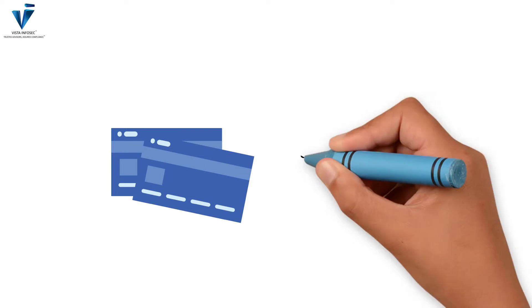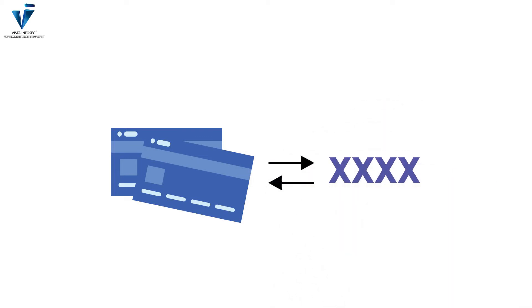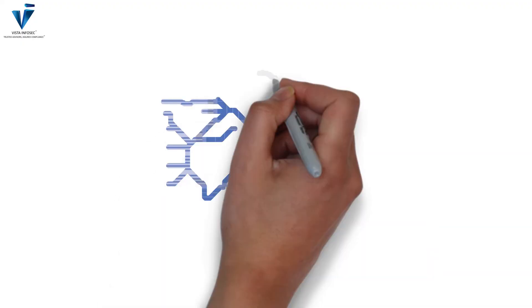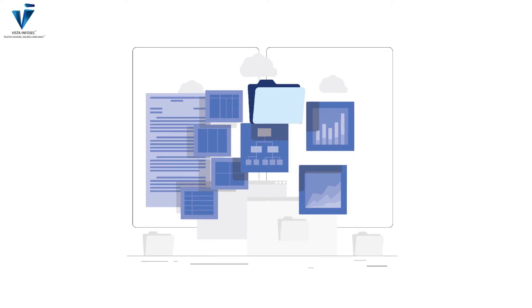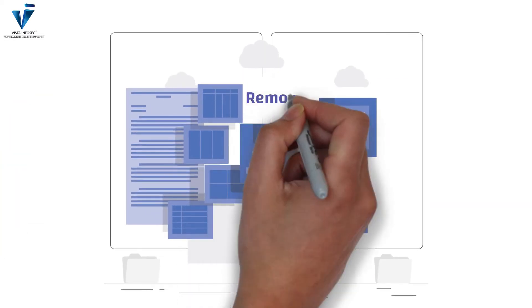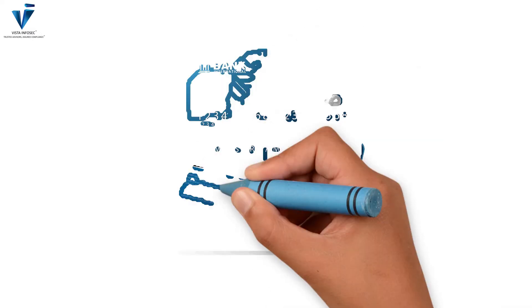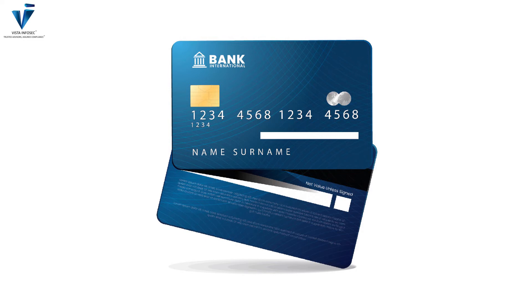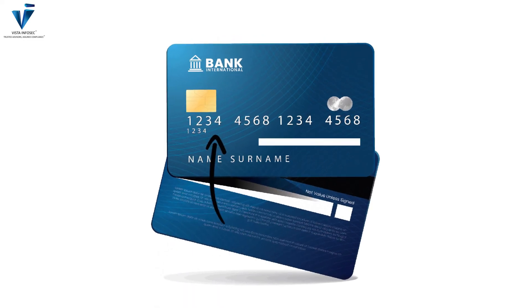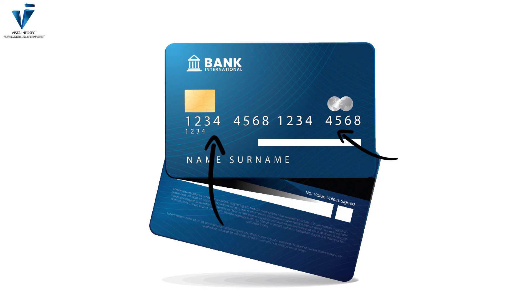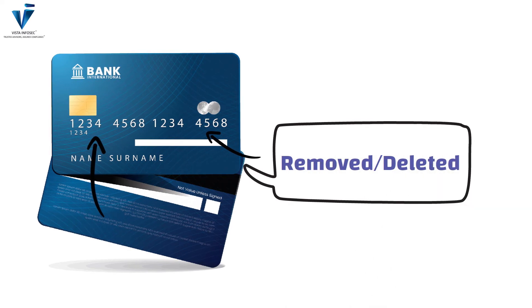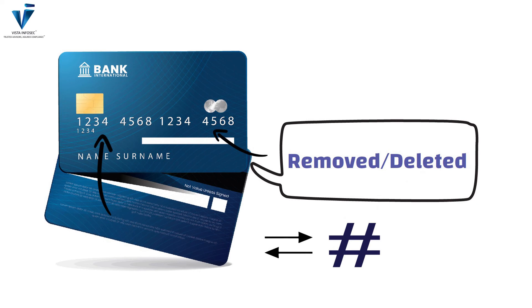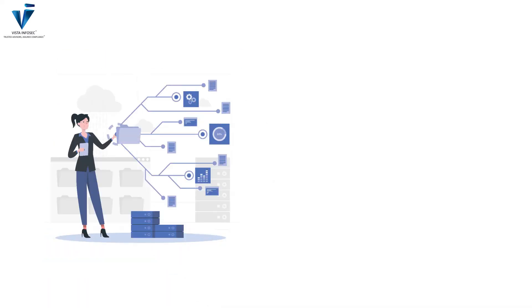Similar to masking, the technique of truncation is the process of ensuring that stored card data is rendered unreadable. However, in this process a segment of the card data is removed rather than masked with alternate characters. While it is quite similar to masking in that the first six and last four digits would be displayed, the rest of the digits are permanently removed or deleted rather than replaced with characters or hash.